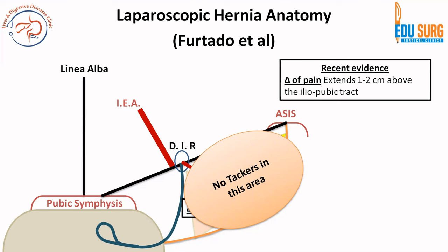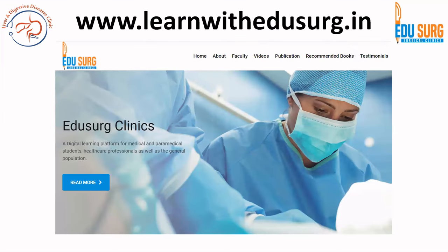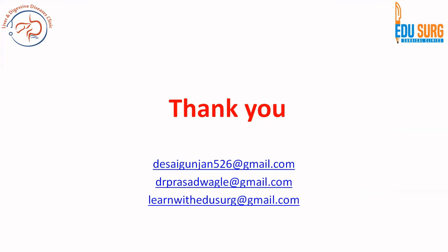Recent articles suggest that the triangle of pain extends 1 to 2 cm above the iliopubic tract, and this has to be kept in mind. With that we come to an end of the inverted Y and phi triangle concept for laparoscopic inguinal hernia anatomy — one of the very important concepts for performing inguinal hernia surgeries laparoscopically and also very important for exams. Our website is www.learnwitheducers.in. Look at the videos if you have missed any. We also have book recommendations for surgery, anesthesia, and radiology. Thank you.